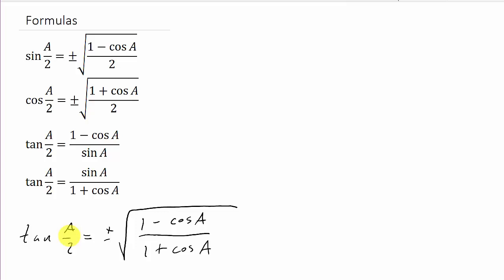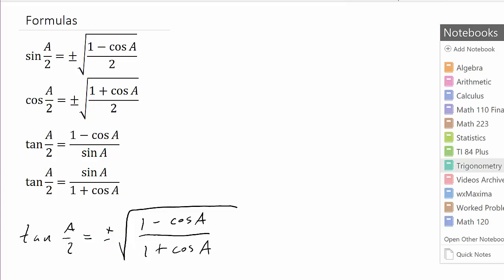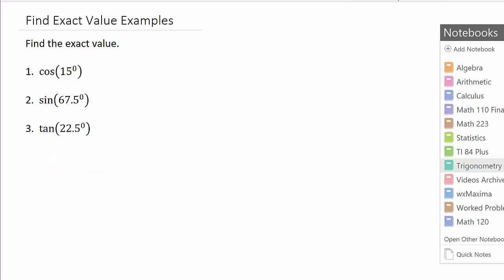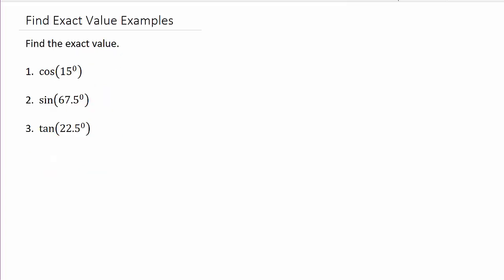Notice that the sine, cosine, and this tangent formula all have plus or minus. You've got to decide if it's going to be plus or minus when you're evaluating these. So, first example: let's look at cosine of 15 degrees — we want to find the exact value.